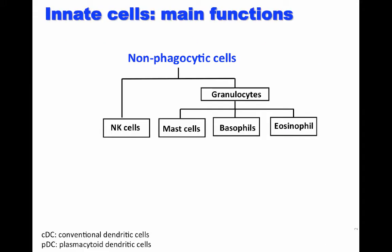Non-phagocytic cells are divided into granulocytes and natural killer cells. As you can see, granulocytes are divided into mast cells, basophils, and eosinophils.